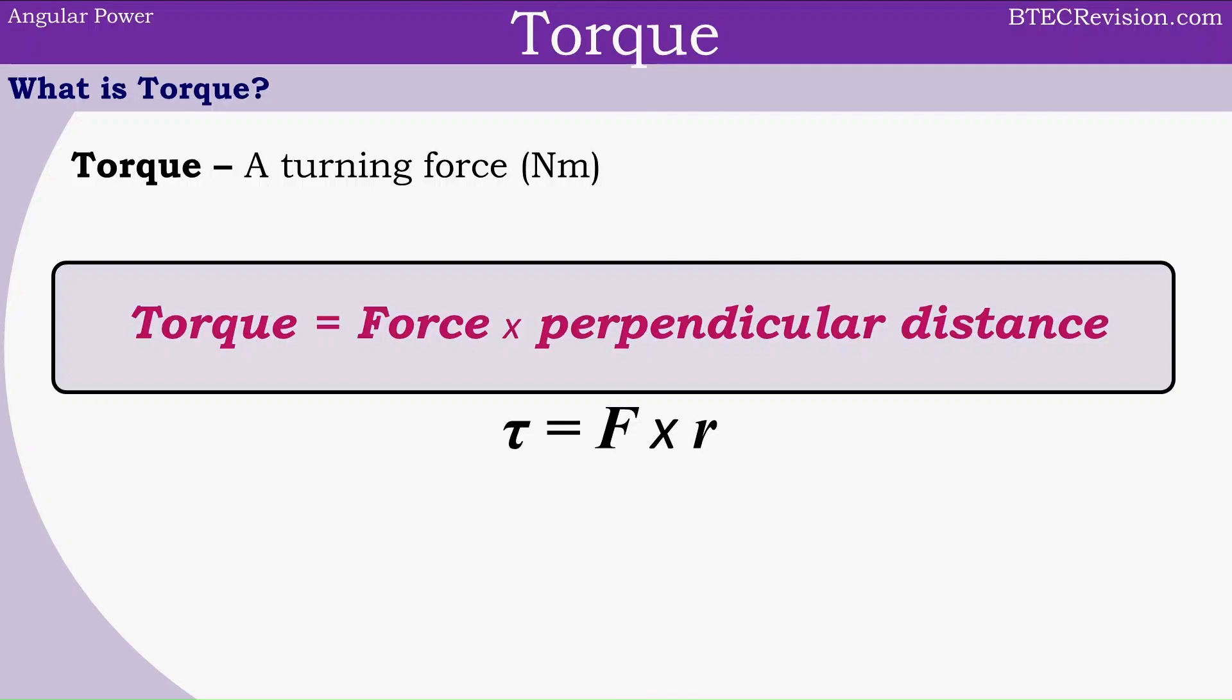Torque equals force times perpendicular distance from the pivot, and we can see the short form is Greek letter tau, which stands for torque, F for force, and R stands for perpendicular distance. Tau equals F times R.